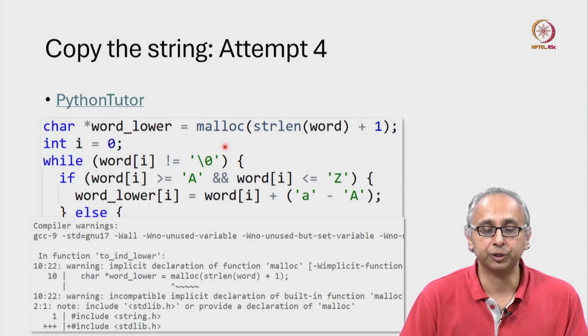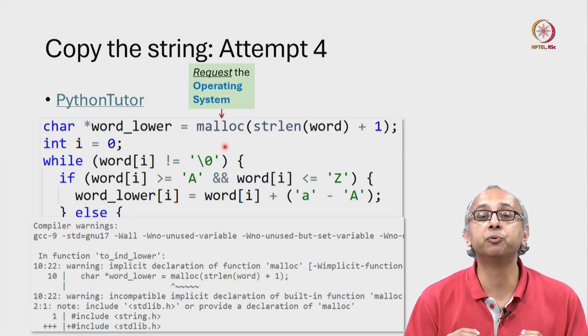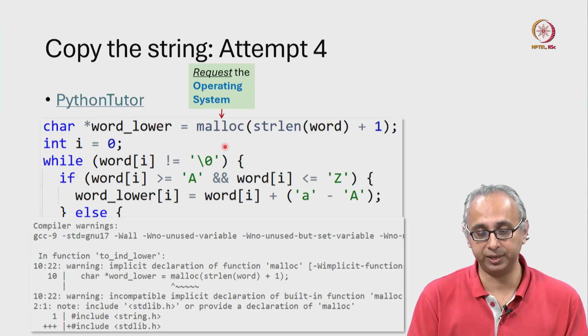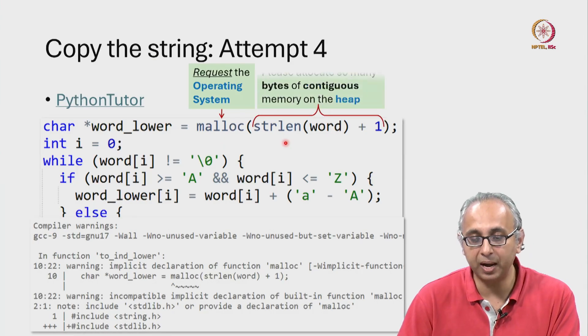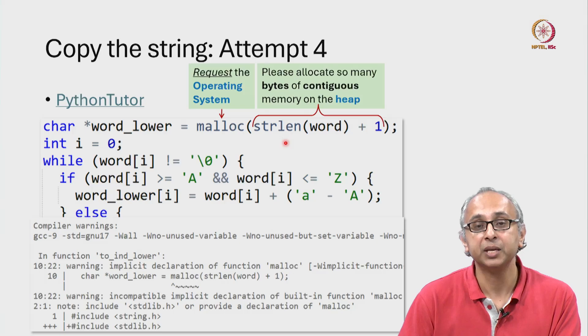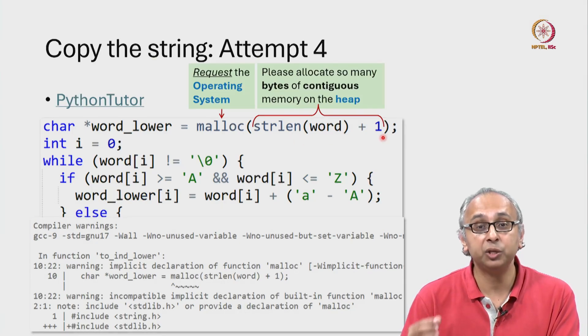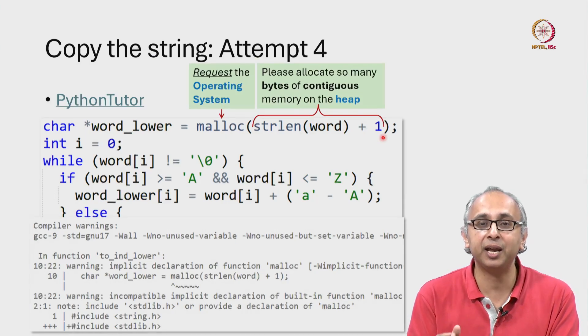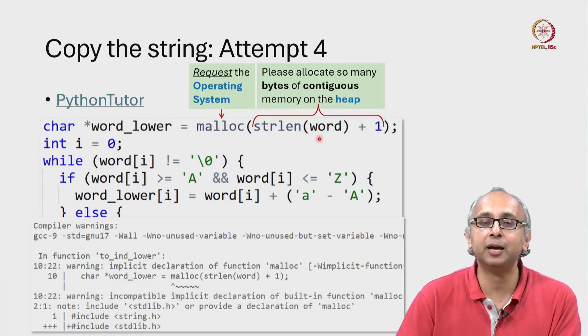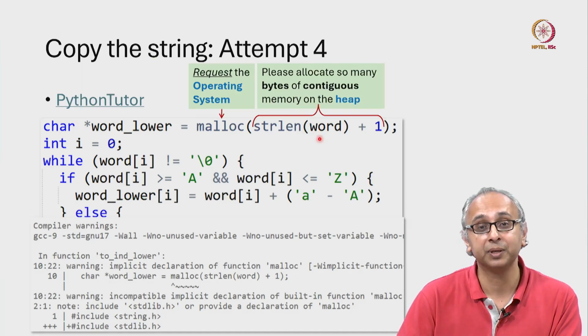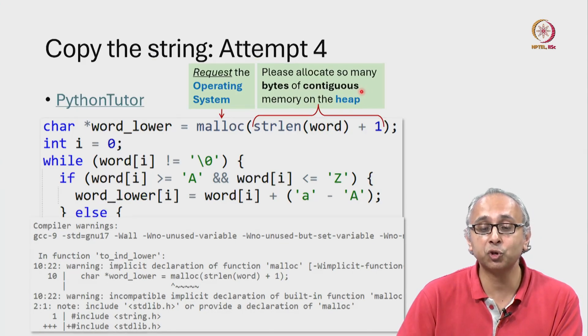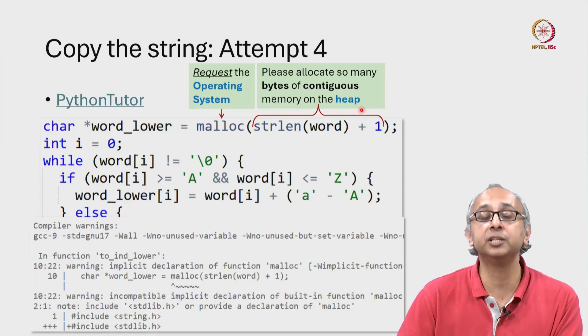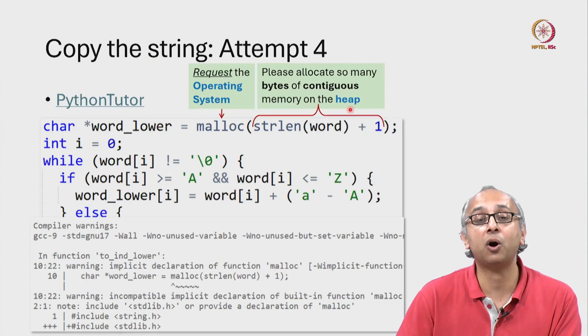This malloc function is technically a request to the operating system. You are requesting the operating system for this amount of memory, specifically this amount in bytes and by the way you want it all contiguous because we intend to put an array of characters over there. So this is basically asking the operating system, dear operating system, please give me so many bytes of contiguous memory and I want it on the heap.